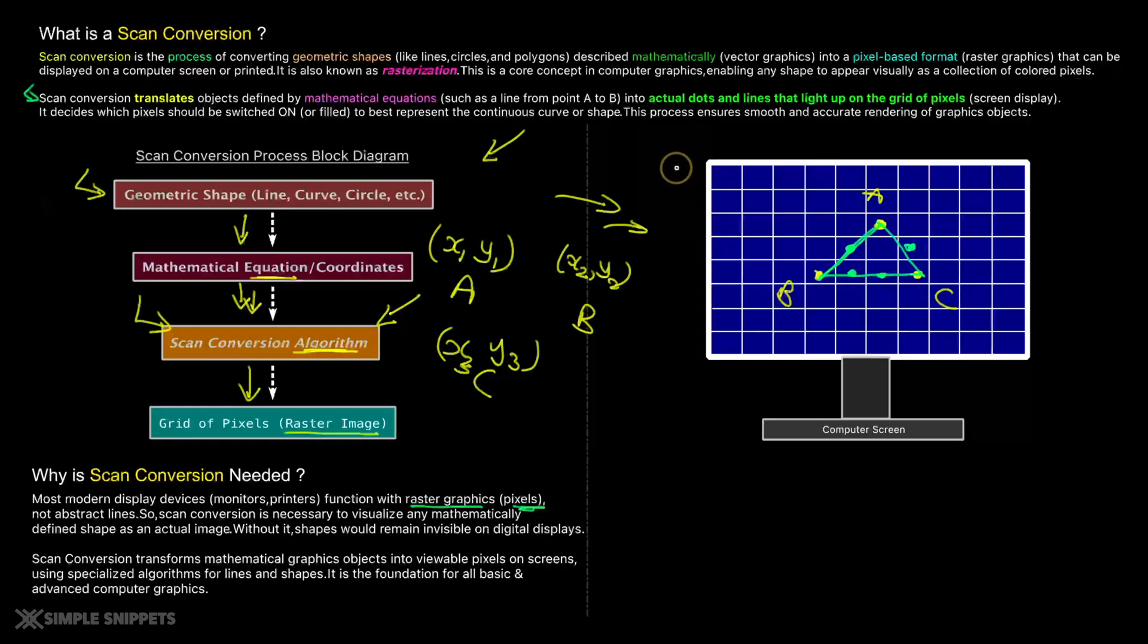It is basically how many number of pixels are there horizontally into how many number of pixels are there vertically. So sometimes you have a 1080p display, you have a 4K display, you have a 2K display. And depending upon how many number of pixels you have, that defines the actual resolution of your screen. So these displays are not abstract lines. These are basically pixels, collection of pixels arranged in this grid format.